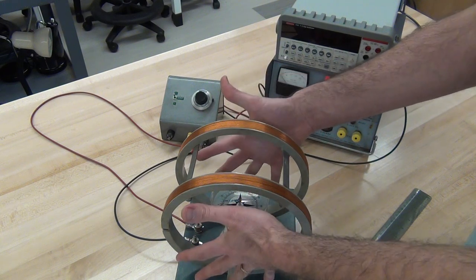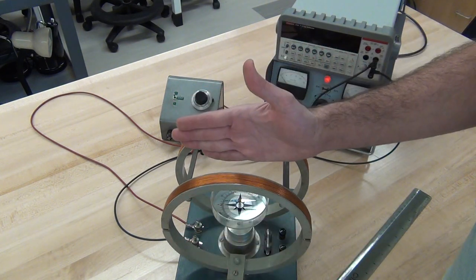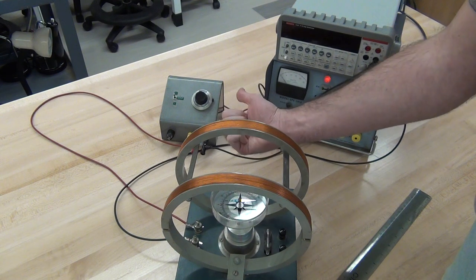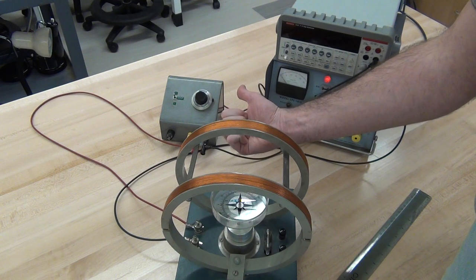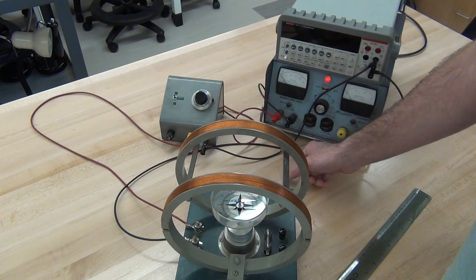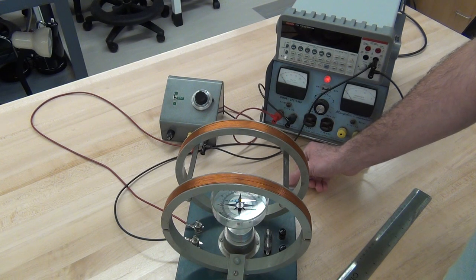We want the face of the coil to be parallel to the needle so that the field generated by the coil, which is along the axis of the coil, will deflect the needle.